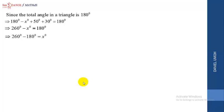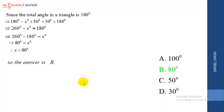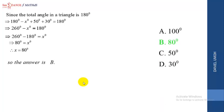So 260 degrees minus 180 degrees equals 80 degrees, therefore x equals 80 degrees. From the given options, the answer is B — 80 degrees.